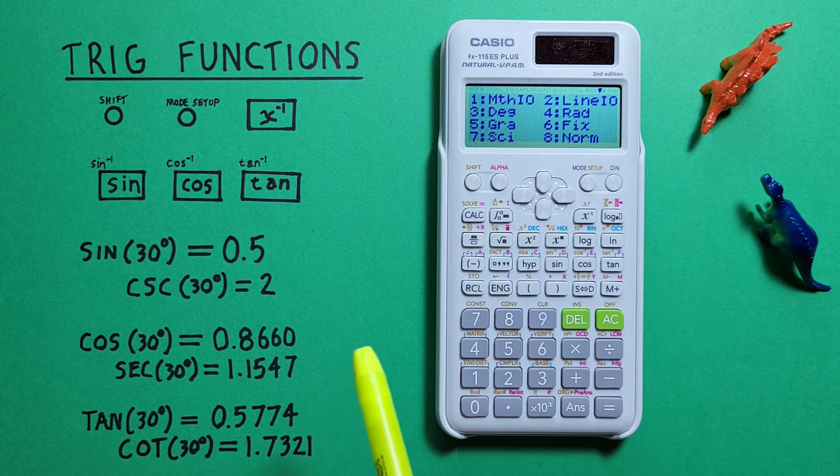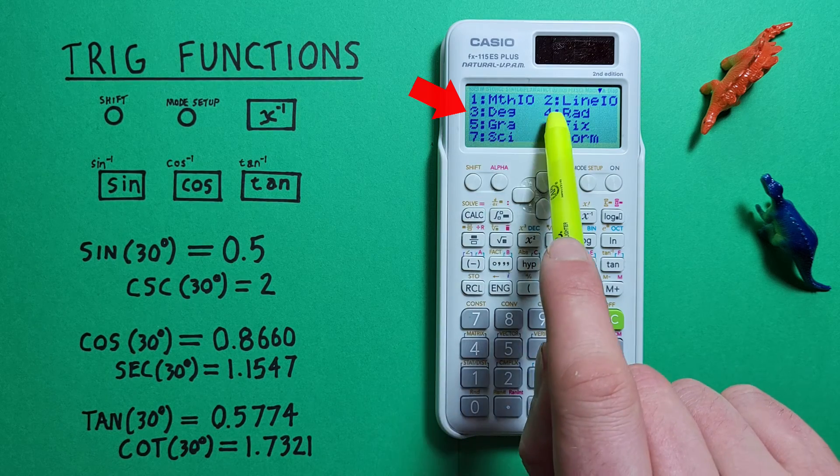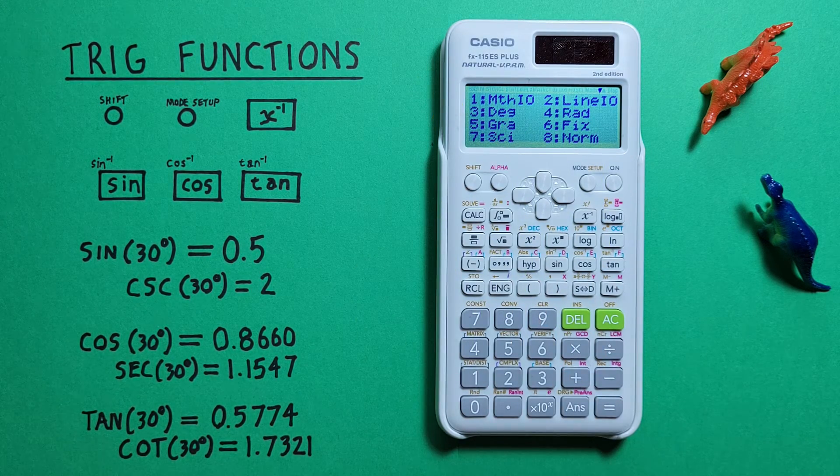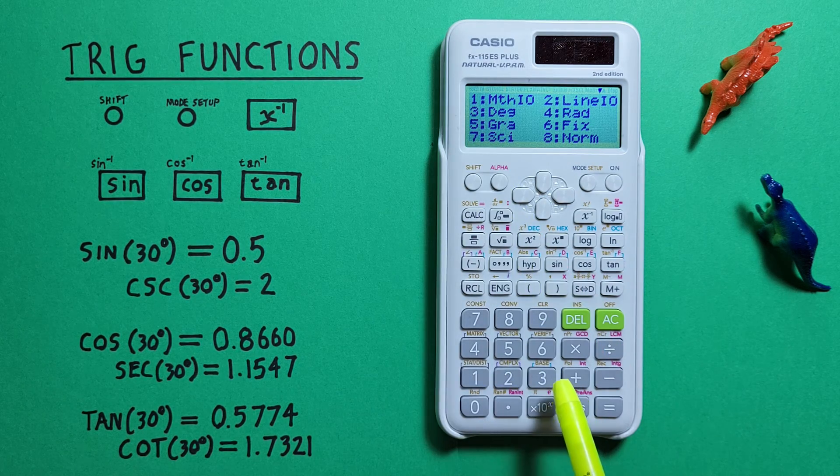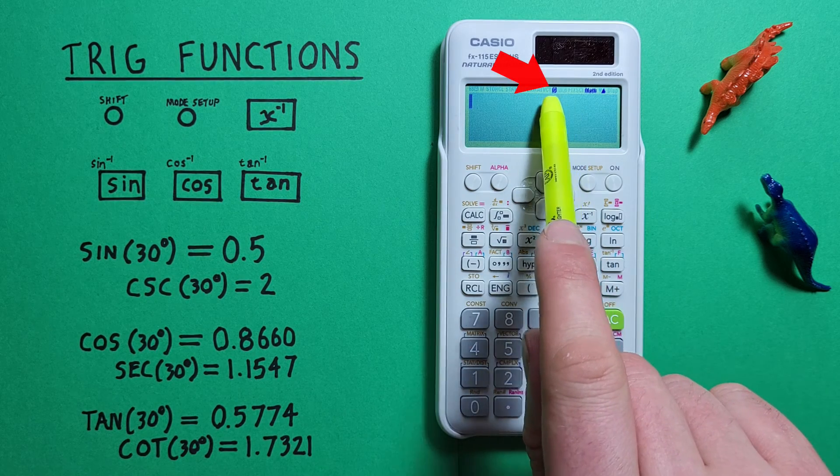For these examples we'll be using degrees so we'll need to select number three. If you're working in radians or gradians you'll need to select those. So for us degrees, number three, and now we see a D at the top of our screen letting us know we're in degree mode.